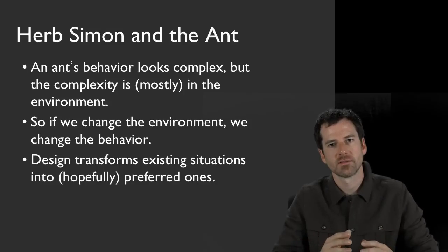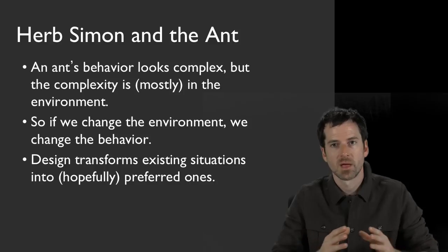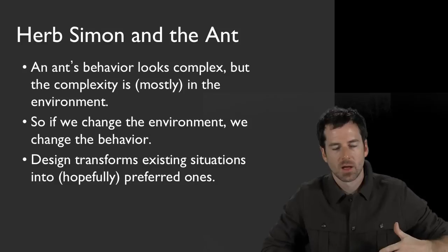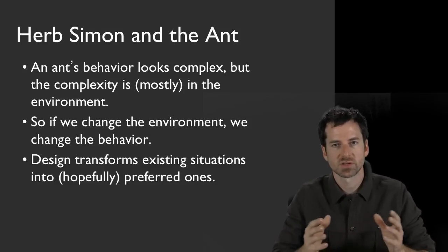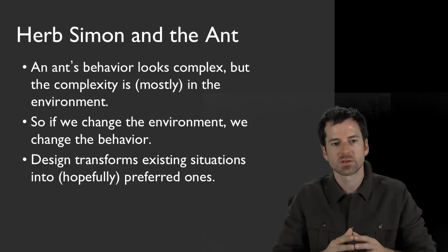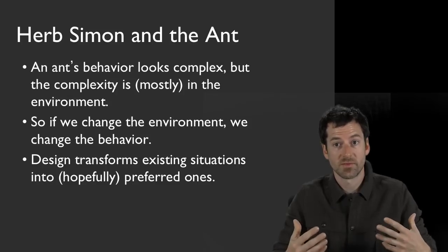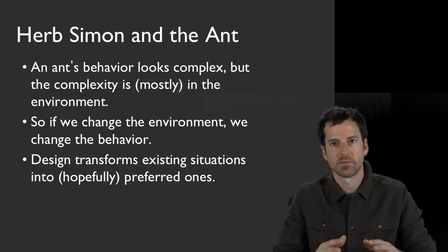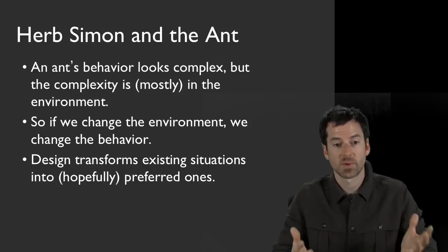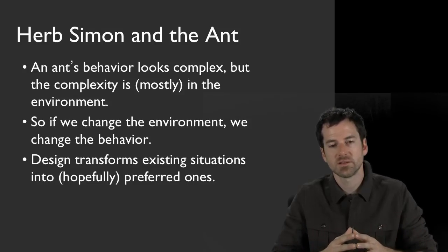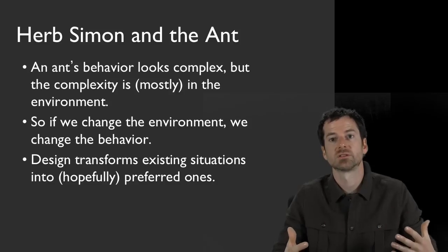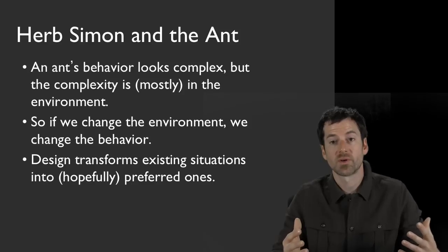Herb Simon tells the story of watching an ant cross the sand in the desert, and the ant's behavior has a whole lot of weaves and its navigation is quite complex. Herb noticed that a lot of the complexity that was apparent there came from the environment, from the structure of the desert sand, and that if he changed the environment, he could change the ant's behavior. This is an example of how design is a way of transforming people's existing situations into hopefully ones that people find preferable.